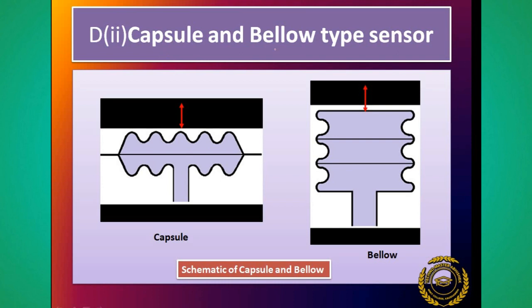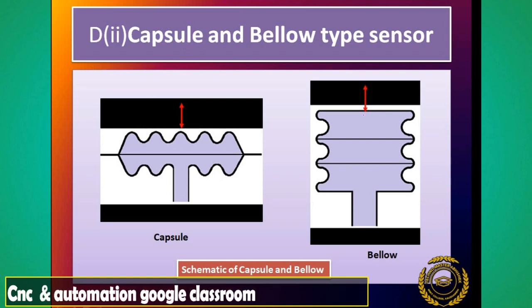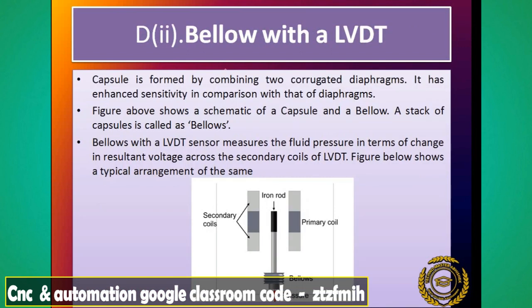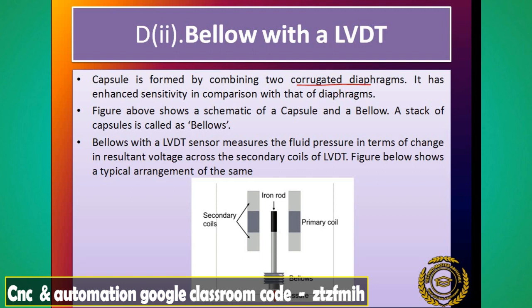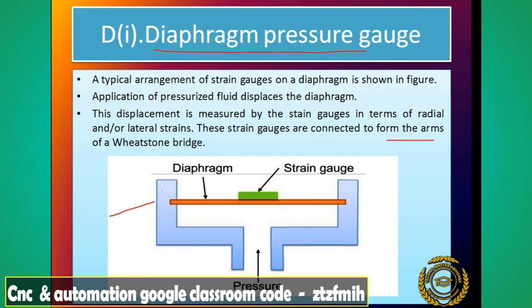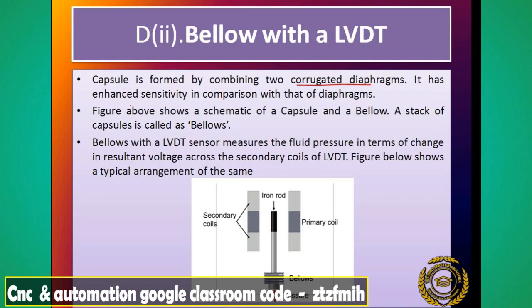Next type है capsule or bellows type। Capsule type में diaphragm कुछ ऐसा होता है, और bellows type में कुछ ऐसा shape होता है - यहाँ pressure पड़ेगा। Capsule is formed by combining two corrugated diaphragms - corrugated मतलब ऊपर-नीचे उभार वाला। दो corrugated diaphragm को मिलाकर capsule type बनता है। It has enhanced sensitivity in comparison with the flat diaphragm - capsule type यूज़ करने से sense करने की क्षमता ज़्यादा बढ़ जाती है।